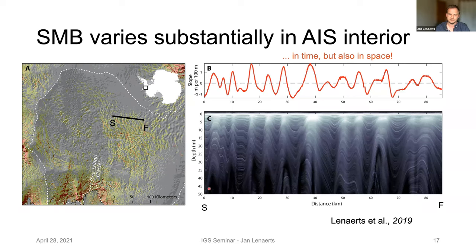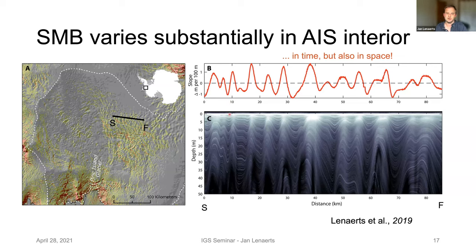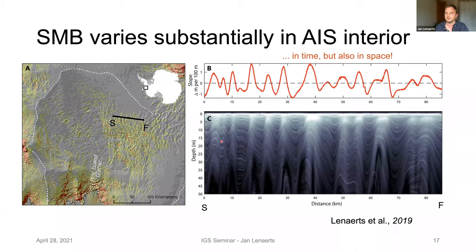Along this transect from S on the left to F on the right, there is substantial variation in surface slope — surface topography variations that are really substantial. Along with those variations, we see in airborne radar from Operation IceBridge extreme variations in the depth of bright horizons close to the surface — going down to around 50 meters depth. The bright reflectors vary in depth substantially by a factor of 2 or 3 on spatial scales of a few kilometers. This is extreme SMB variation in space. It's caused by blowing snow — a very simple physical process.